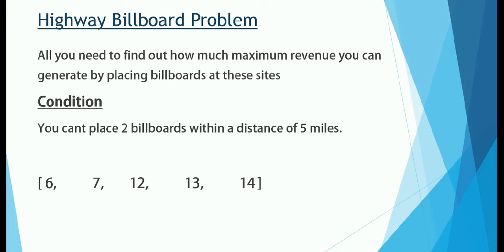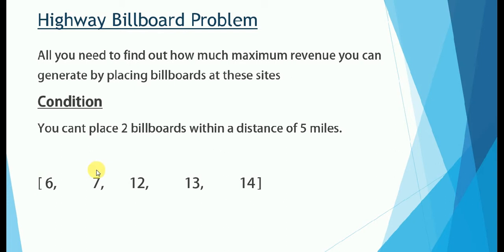Here are the distances. If you are placing a billboard at one site, you can't place a billboard at another site if the distance between them is less than 5 miles — it has to be greater than 5 miles. For example, you can place a billboard at 6 miles as well as at 12 miles, because 12 minus 6 equals 6, which is greater than 5. But you cannot place billboards at 7 miles and 12 miles together, because 12 minus 7 equals 5, which does not satisfy the condition.